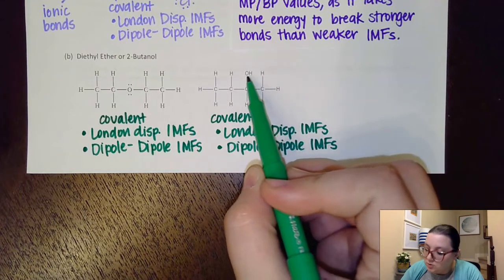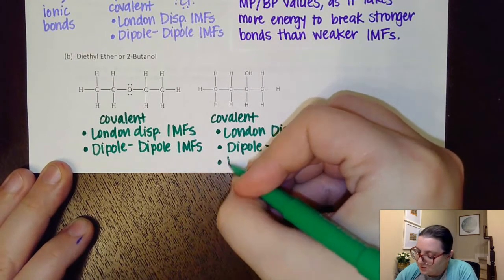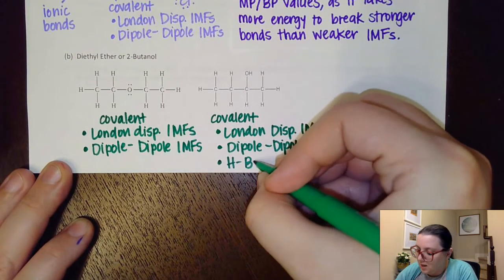However, here I do have the oxygen and the hydrogen bonded together. So this one would have the additional hydrogen bonding IMFs.